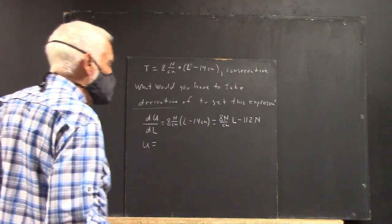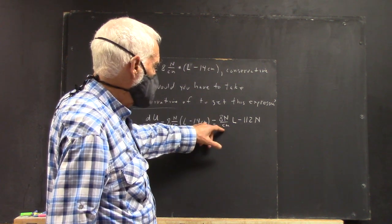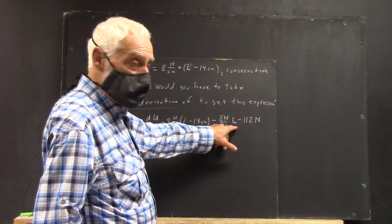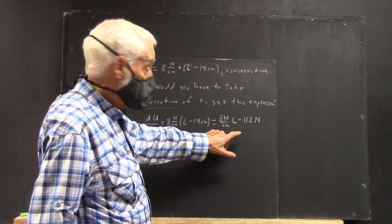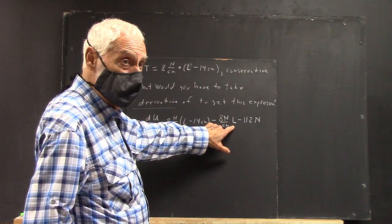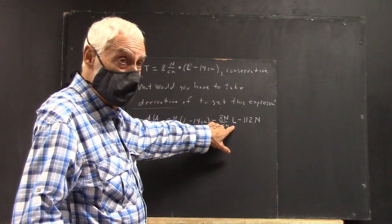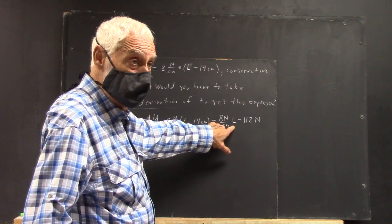So, what would we take the derivative of to get 8 newtons per centimeter times L? Well, this is just a constant times L. What we take the derivative of to get L, it would be L squared over 2, right?